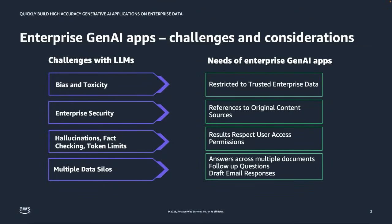Enterprise data is spread across different data silos. It could be on SharePoint, it could be on Confluence, it could be on wikis or various other data sources. It is very important that these generative AI applications are restricted to trusted enterprise data, they provide references to original content and sources, and most importantly they respect user access permissions and are able to connect to all the data across all of these silos.